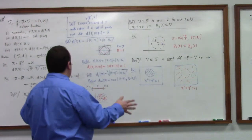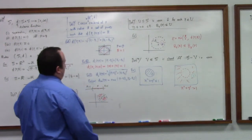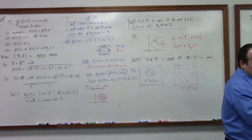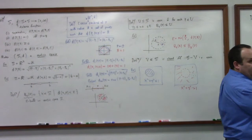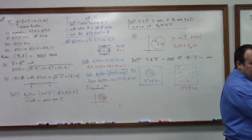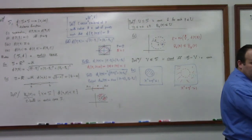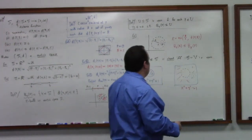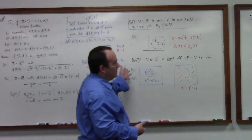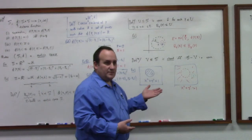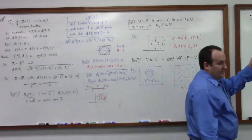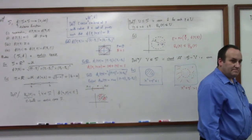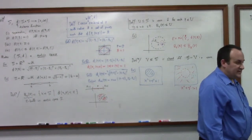So one thing I should mention before we erase all this is, of course, inner product space and normed linear space, they're also metric spaces because you can define distance function using the norm, right? The distance between P to Q is the norm of the vector Q minus P. And since we can define a norm with an inner product, that gives us distance in inner product spaces too.